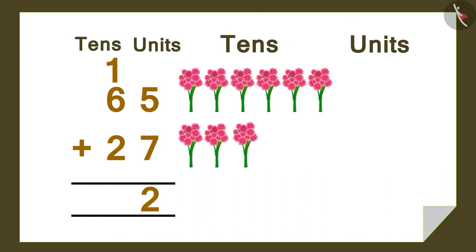We will then take 1 to the tens place. Now we have 1, 2, 3, 4, 5, 6, 7, 8, and this bunch from the carryover making it 9 bundles of 10s. This means if we add 6 plus 2 and the 1 from the carryover, then we have 9 bunches of 10 flowers each. We will write 9 under the tens section like this.